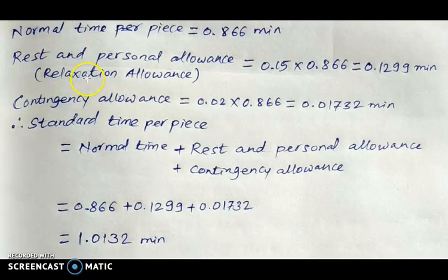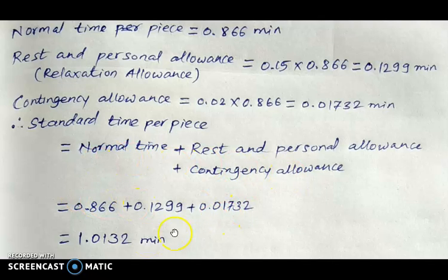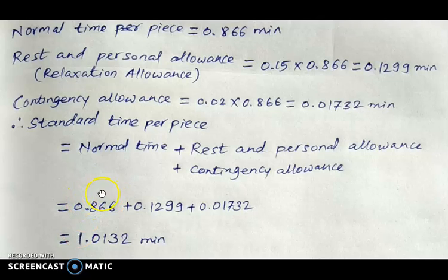Finally, standard time per piece or per cycle equals normal time plus allowances. The allowances here are relaxation allowance and contingency allowance. Adding them gives the standard time per piece as 1.0132 minutes. This method is applicable to any problem dealing with the calculation of standard time. I hope you have got the requisite knowledge related to standard time calculation. Thank you for watching this video.